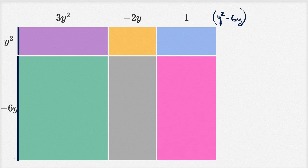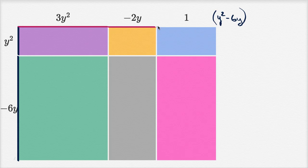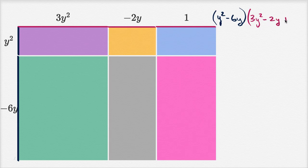What's its width? Well, the width is going to be the width of this purple rectangle — 3y squared — plus the width of this yellow rectangle, which is negative 2y, and then plus the width of this blue rectangle. So if you add them all together, the width of the entire rectangle is going to be 3y squared minus 2y plus 1. And just like that, this expression will give us the area for the entire big rectangle.